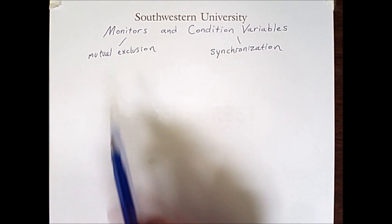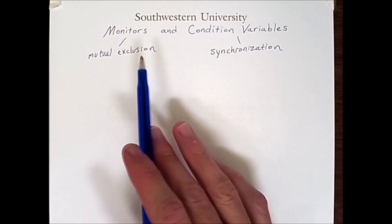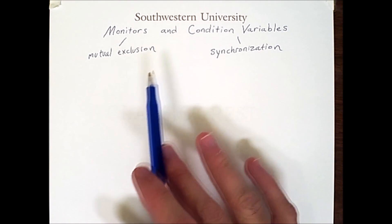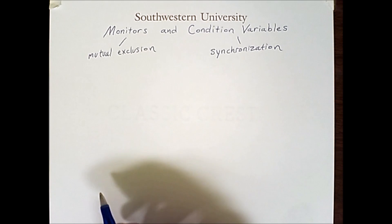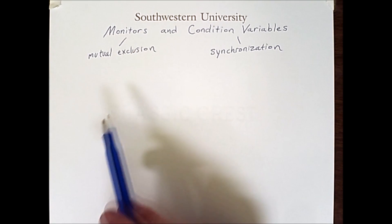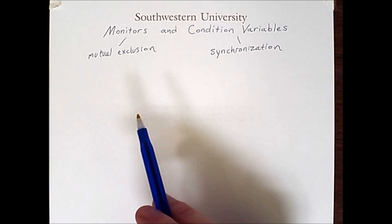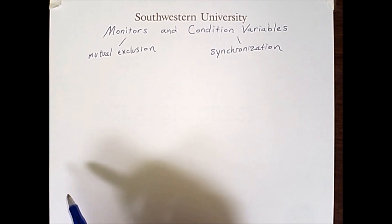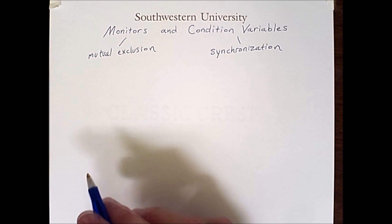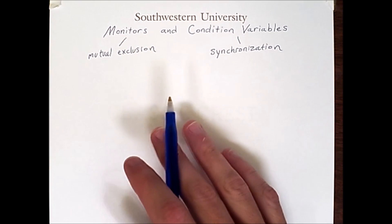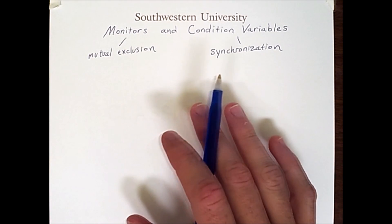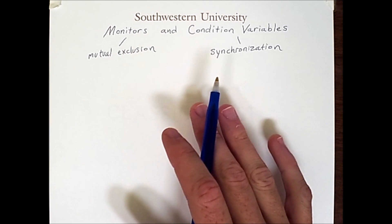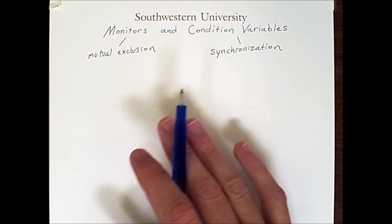These two things are commonly associated, but they are separate entities when used in an actual program. A monitor is a programming language construct, and it is not available in all programming languages. However, even when a monitor is not available, there are usually mechanisms that simulate a monitor fairly well.